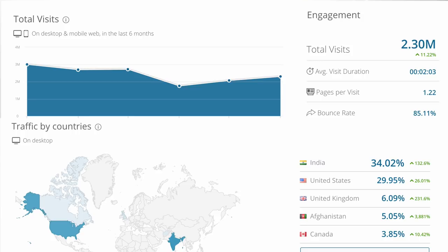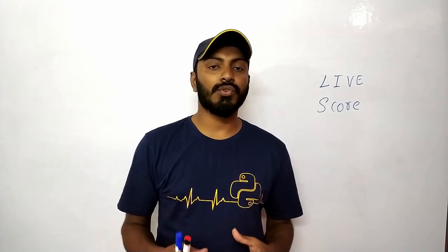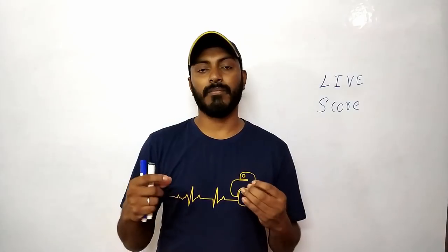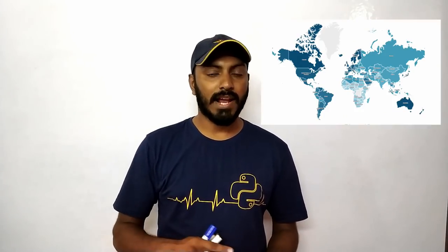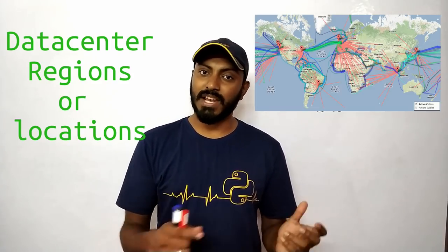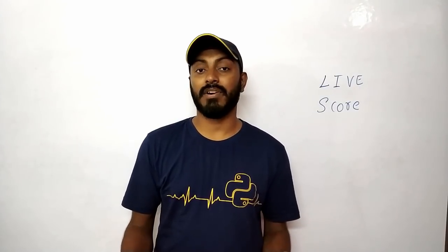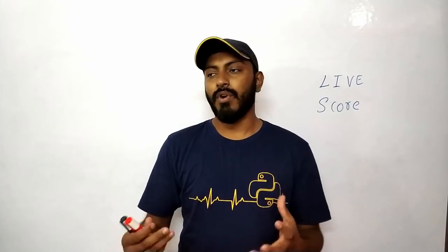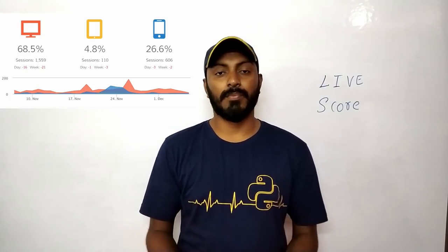For Cricinfo, similarweb.com shows about 2.3 million requests per day, with most traffic from India and about 29% from the United States. This tells you the approximate traffic and where your users are coming from, which helps you curate content for specific locations and decide where to place your data centers or servers on Amazon or any server provider.